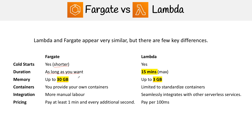For containers, you provide your own containers with Fargate, so you definitely have a lot more flexibility in terms of configuration there. For Lambda, setting up containers is extremely limited — you use the standardized containers and then build stuff on top of that. So if you really need something highly configurable, you're going to need to go with Fargate.